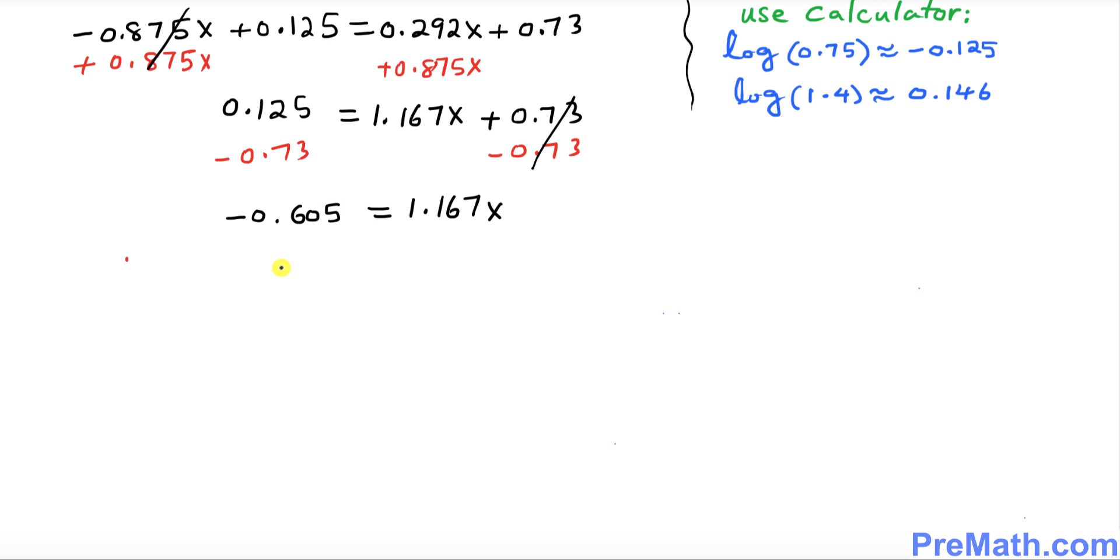So far so good. And now I want you to divide both sides by 1.167 to isolate x. I want to do the same thing 1.167. So pretty much this is gone.